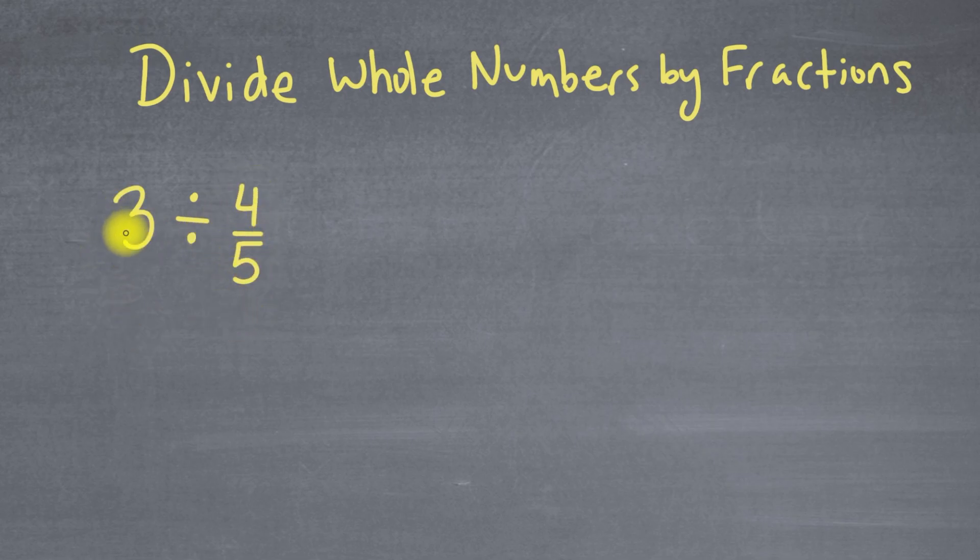Here we have a whole number and we're dividing that whole number by the fraction 4/5. It's important to make sure that we're comfortable with the terminology when we're talking about division. This 3 here is our dividend. This is the value that is getting split up. And this value here is the divisor. This is telling us how we're splitting up the dividend. And when we find our answer, that's going to be called the quotient.